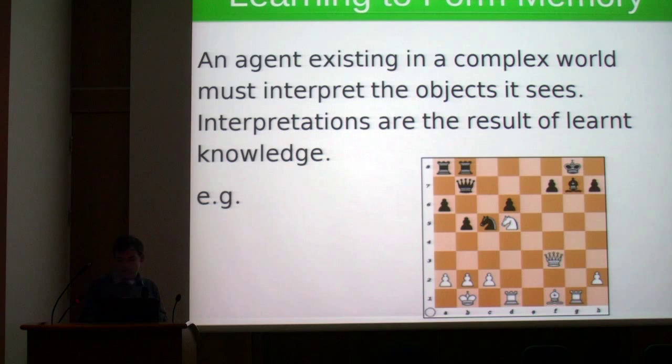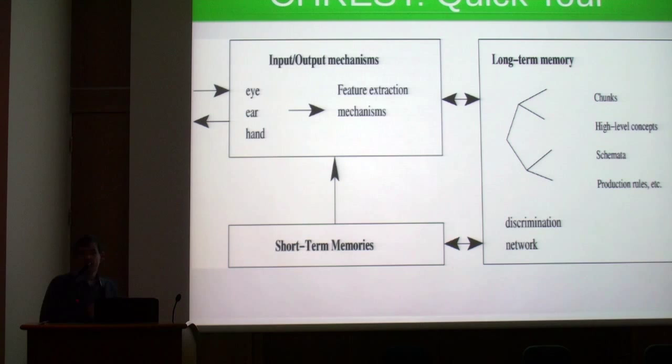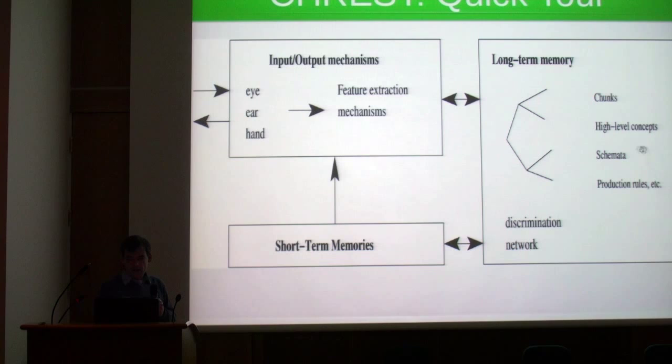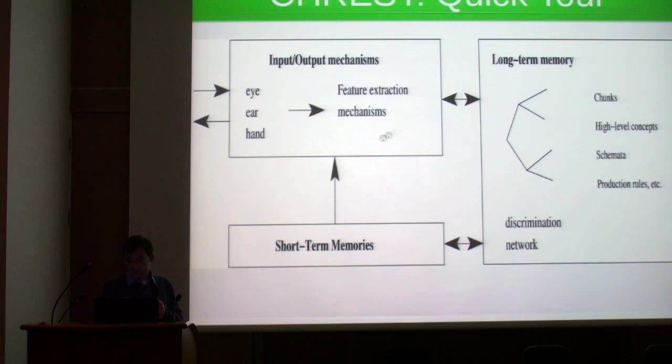We're using an architecture called CREST. The architecture can be divided up into essentially four pieces. We have a facility for interacting with the external world. We have a simulated eye, ear, and hand for current actions. Features are extracted and we have down here a limited capacity short-term memory.